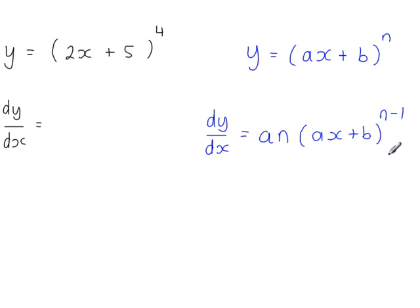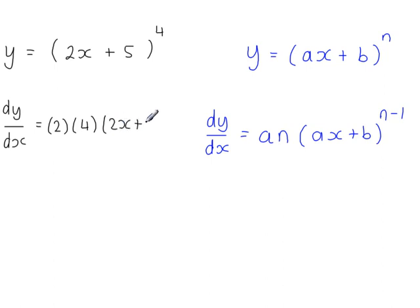So if we apply this formula to this problem, the a — the coefficient of x — is 2, n the power is 4, and then we have the original function there to the power of n minus 1, so 4 minus 1 equals 3. So we can simplify this as 8 times (2x plus 5) to the power of 3.